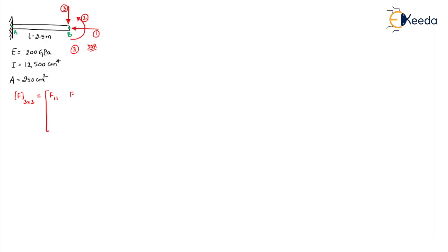So this will be F11, F12, F13, F21, F22, F23, F31, F32 and F33 — the general elements of your flexibility matrix. Whenever we are developing this flexibility or stiffness matrix, we will be developing the values column-wise.